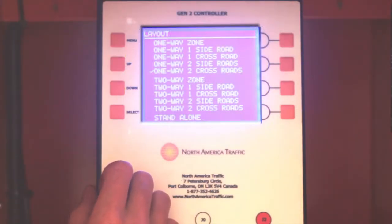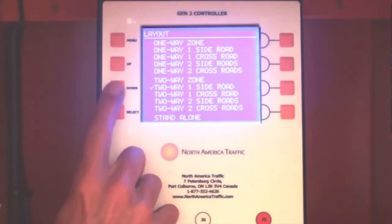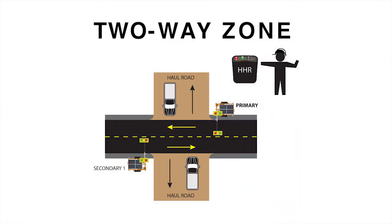Two Way Zone is applicable only when operating two signals in manual mode. The primary and secondary one will always display the same signal indications.